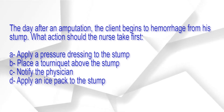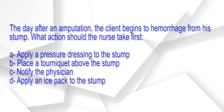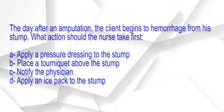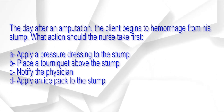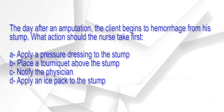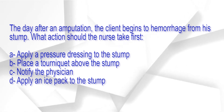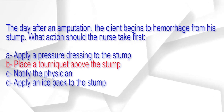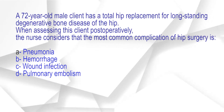The day after an amputation, the client begins to hemorrhage from his stump. What action should the nurse take first? The options are: A. Apply a pressure dressing to the stump. B. Place a tourniquet above the stump. C. Notify the physician. D. Apply an ice pack to the stump. The correct answer is option B: Place a tourniquet above the stump.